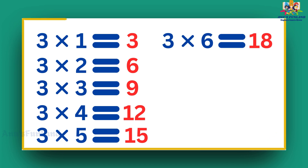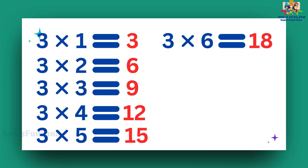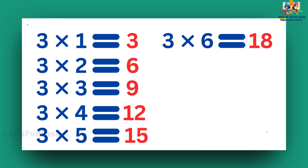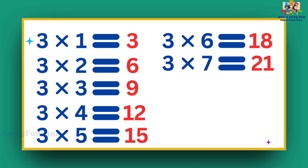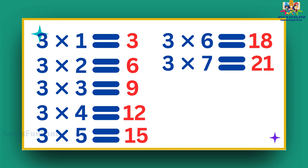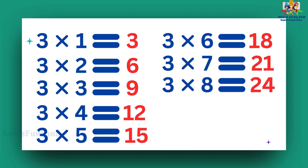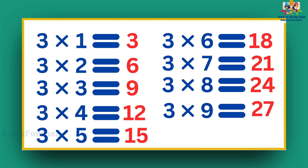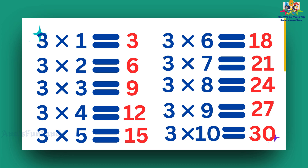Three sixes are eighteen. Three sevens are twenty-one. Three eights are twenty-four. Three nines are twenty-seven. Three tens are thirty.